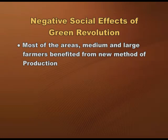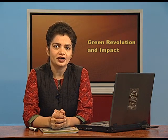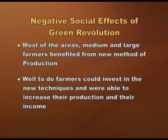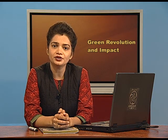First, in most areas, it was primarily the medium and large farmers who benefited from the new methods of production, because the inputs were expensive and small and marginal farmers could not afford them. When agriculturalists produce primarily for themselves and are unable to produce for the market, it is known as subsistence agriculture and they are called peasants. Farmers, on the other hand, are able to produce surplus over and above family needs and sell it in the market, making them part of the wider market economy. Green revolution crops were highly profitable because they yielded more produce, and well-to-do farmers could invest in new techniques to increase their production and income.